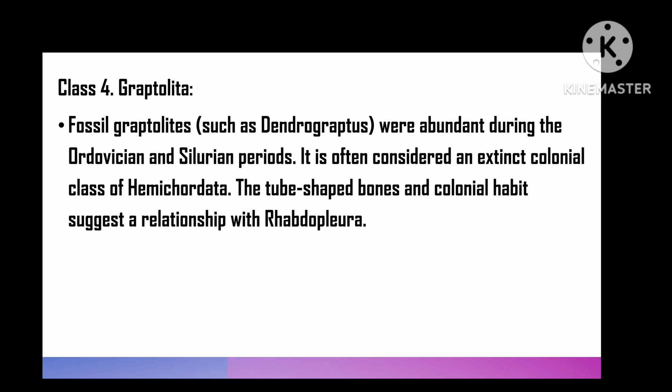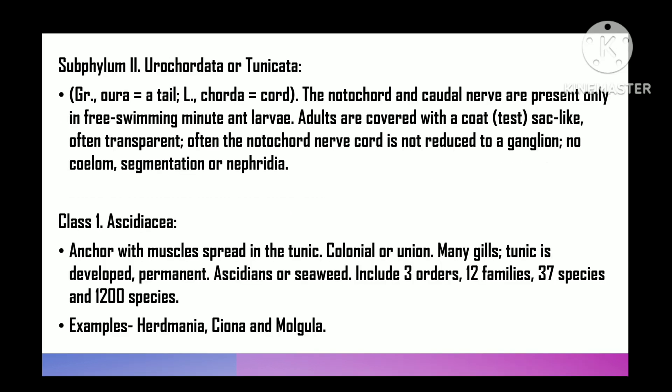Class 4 is Graptolita — the fossil graptolites. For example, Dendrograptus, which were abundant in Ordovician and Silurian periods. These are often considered an extinct colonial class of hemichordate. The tubular chitinous skeleton and colonial habits show an affinity with Rhabdopleura.